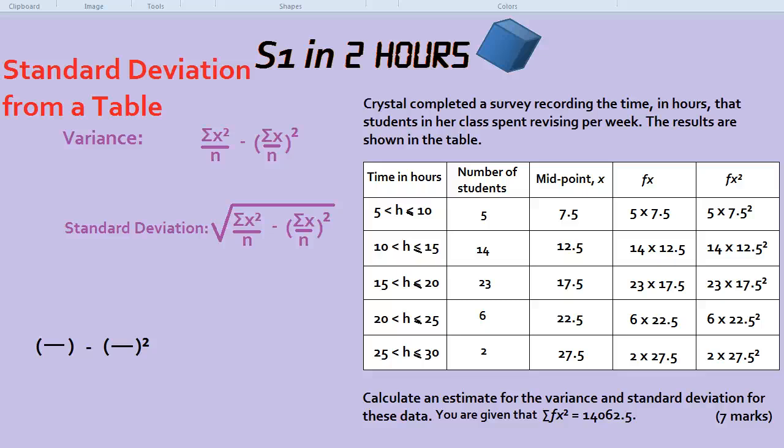There's one key thing to remember when you're working out standard deviation and variance from a table, and that is that you need to focus on the column to the left. This leftmost column is your most important column. Let's look at the question.